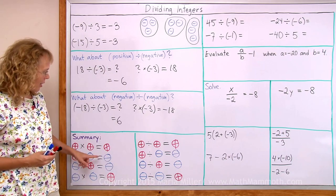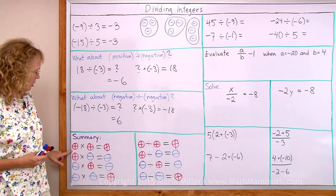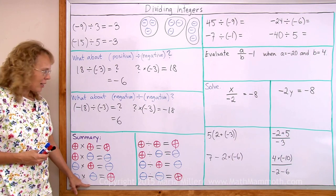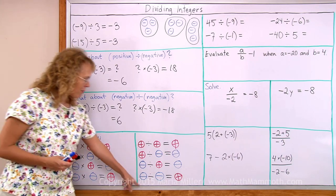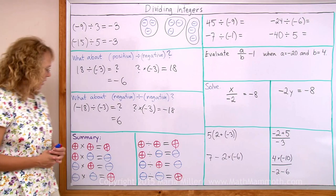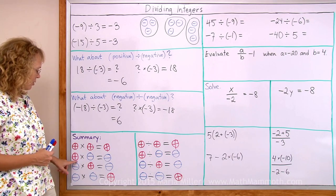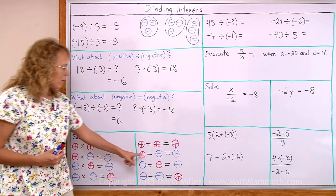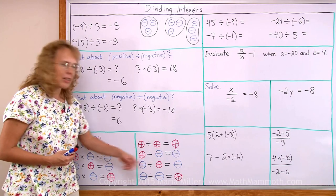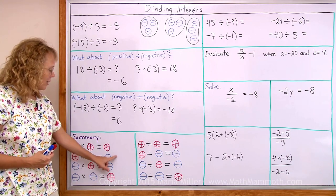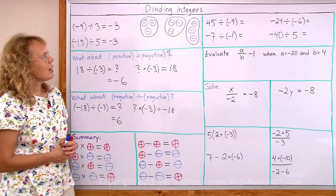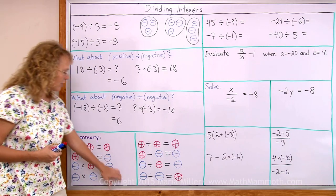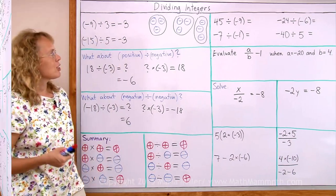Comparing these, we can see that the shortcut rules for multiplication and division are identical — they are the same. If you have two numbers that are both positive or both negative, whether you multiply or divide, your answer will be positive. And if you have two numbers with mixed signs — one positive and one negative — whether you are multiplying or dividing, the answer will be negative. So that helps us remember these rules, because they are actually the same for multiplication and division.